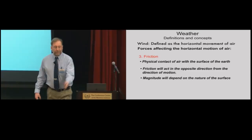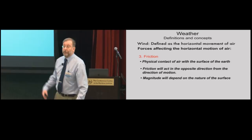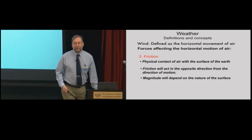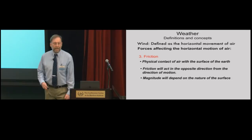Friction acts in opposition to motion and slows things down — basically physical contact with the surface. Modifying friction is one of the more difficult things we have to do when putting models together, because friction varies so much both spatially and temporally.